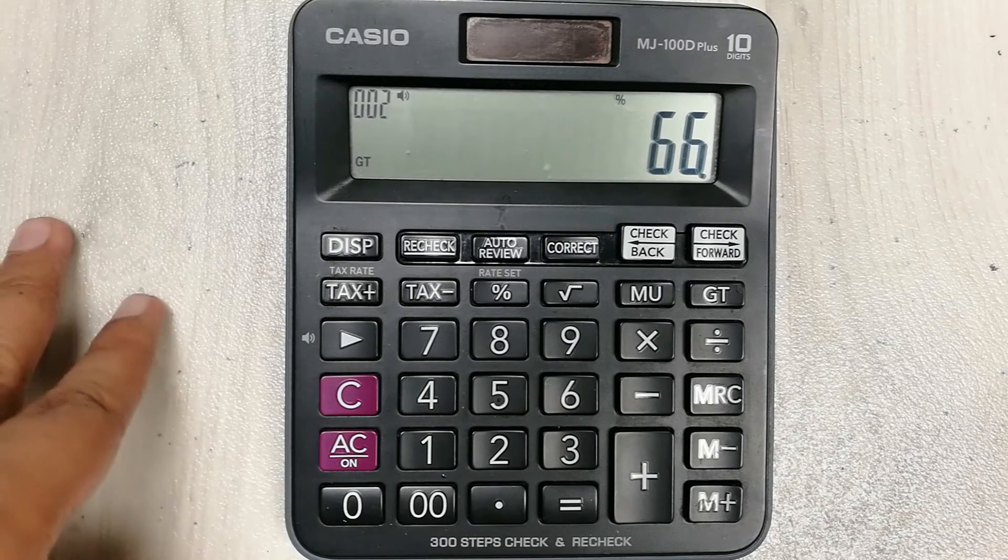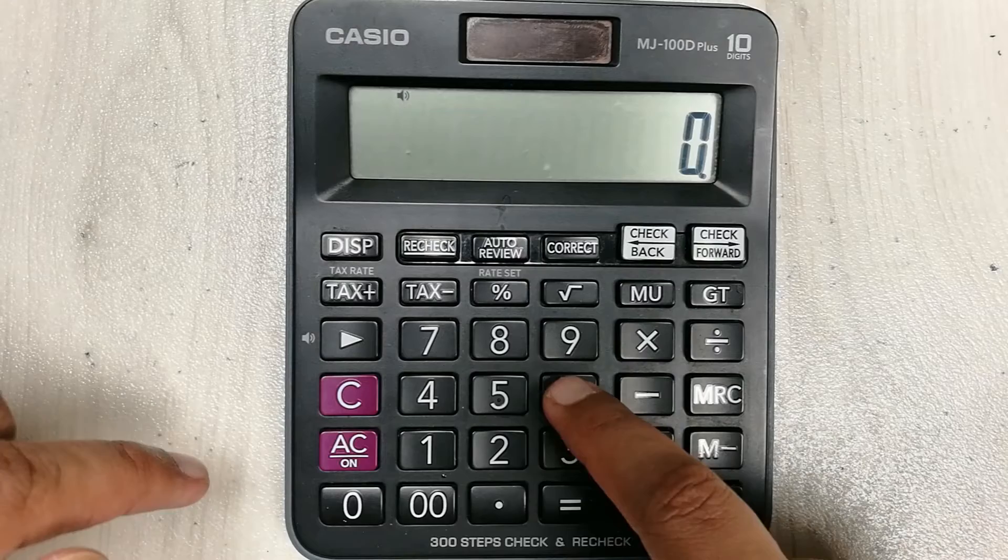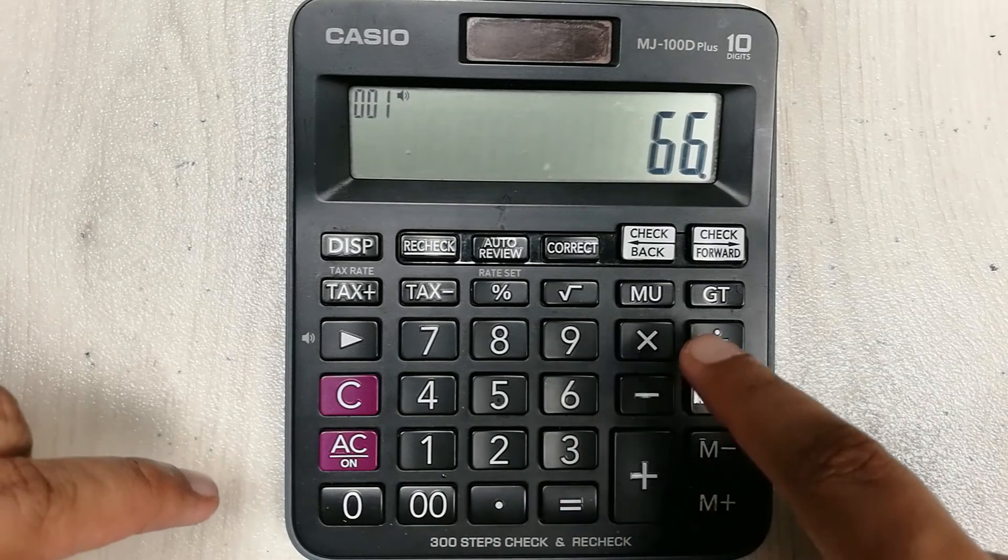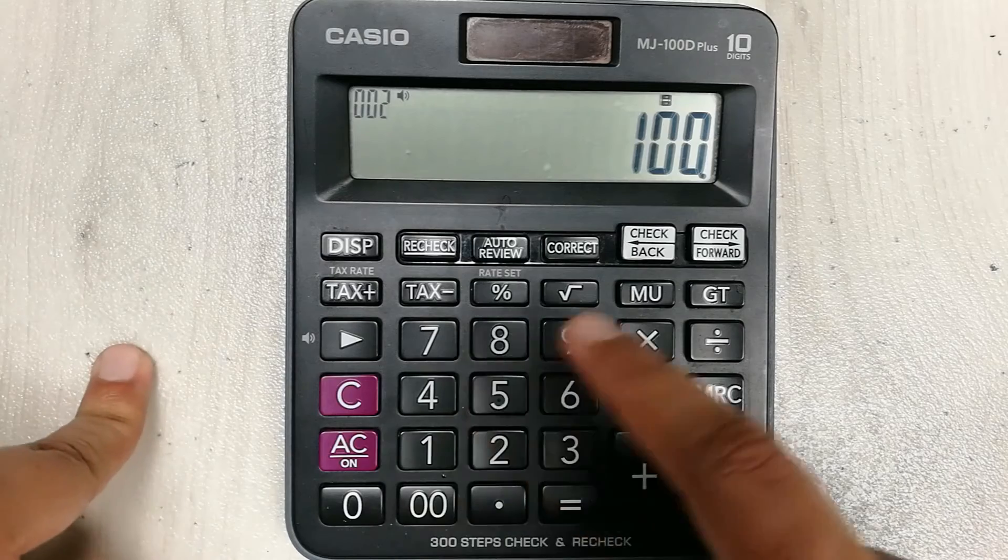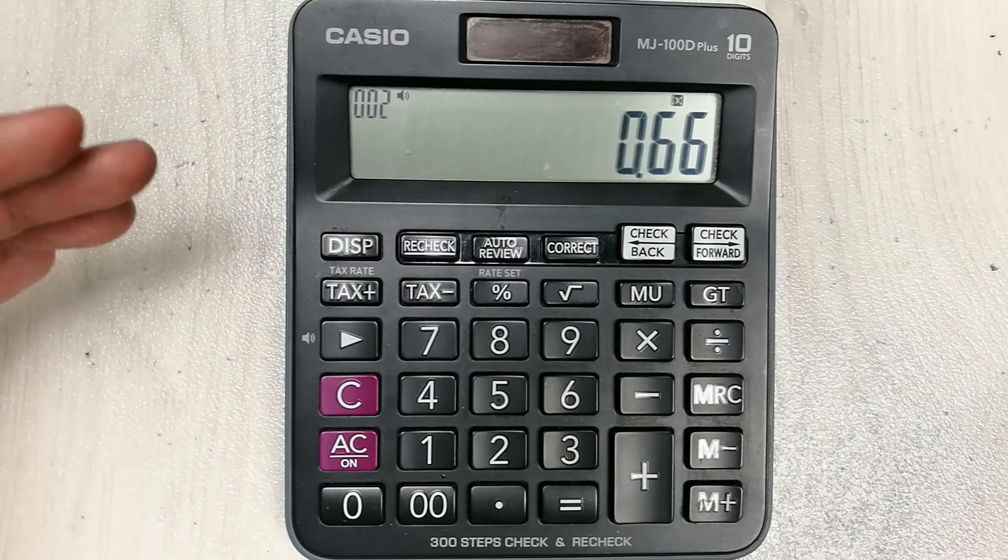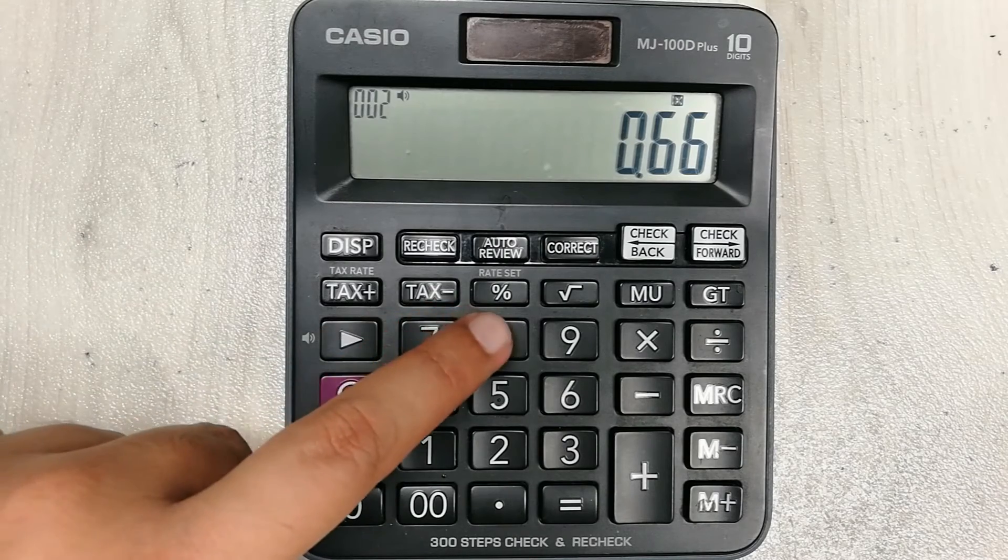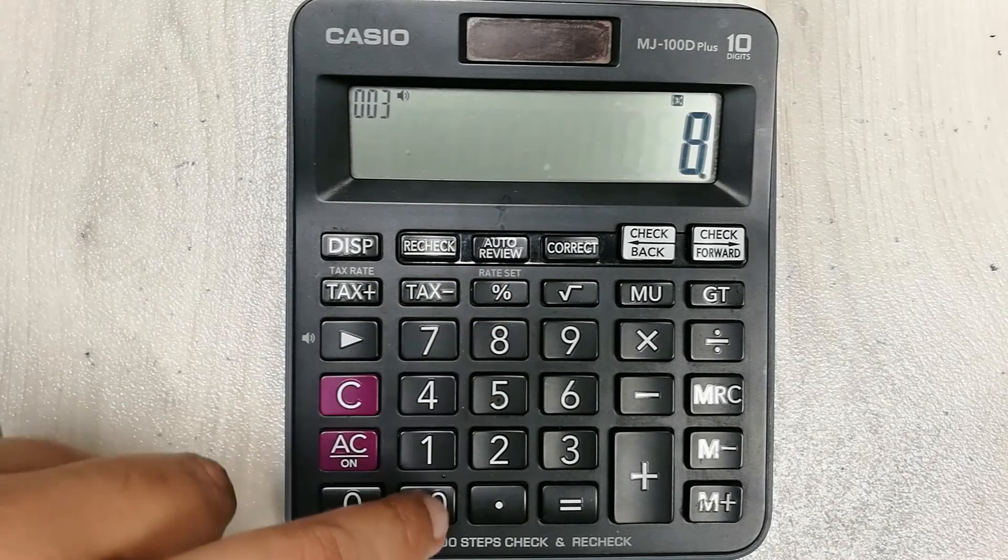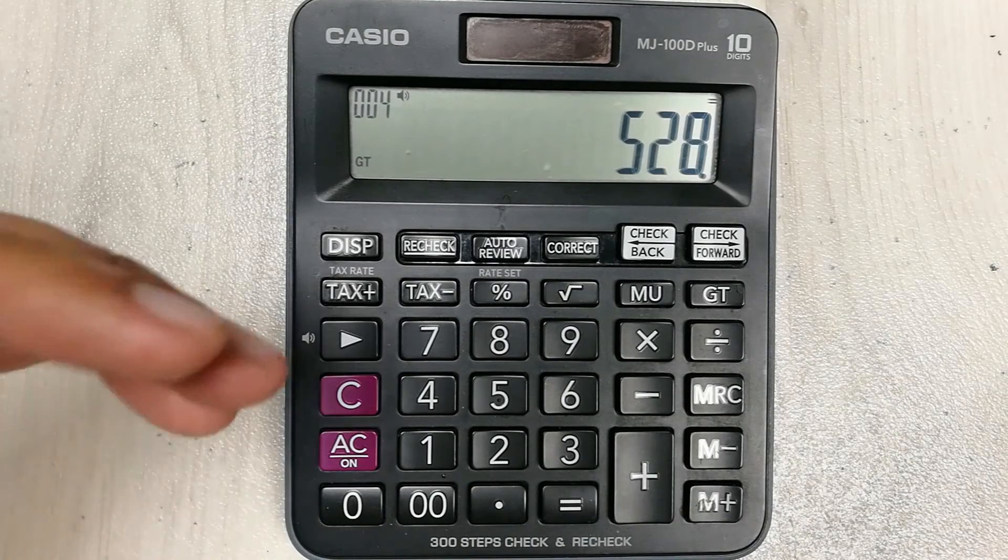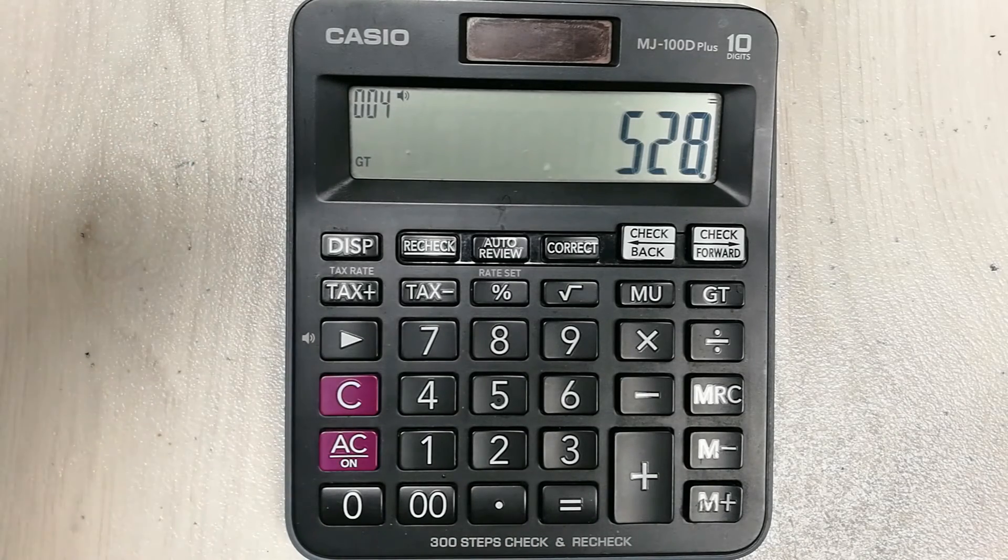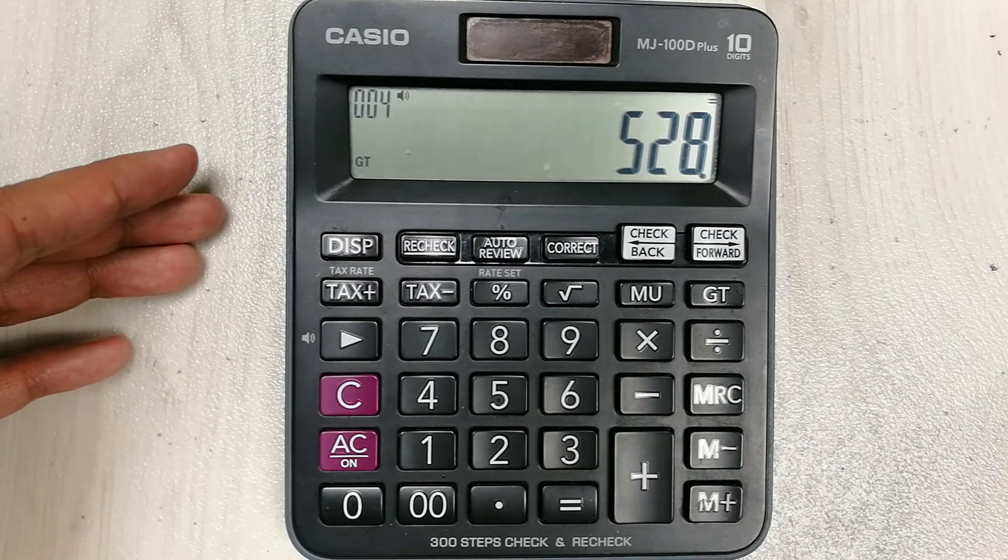What you will do is press AC or ON button, then press 66 divided with 100—always divide with 100—and then multiply with your total exam marks. So for example, your total exam marks were 800, and then you press the equal button. So 528 marks you get out of 800 if you got 66 percent marks.